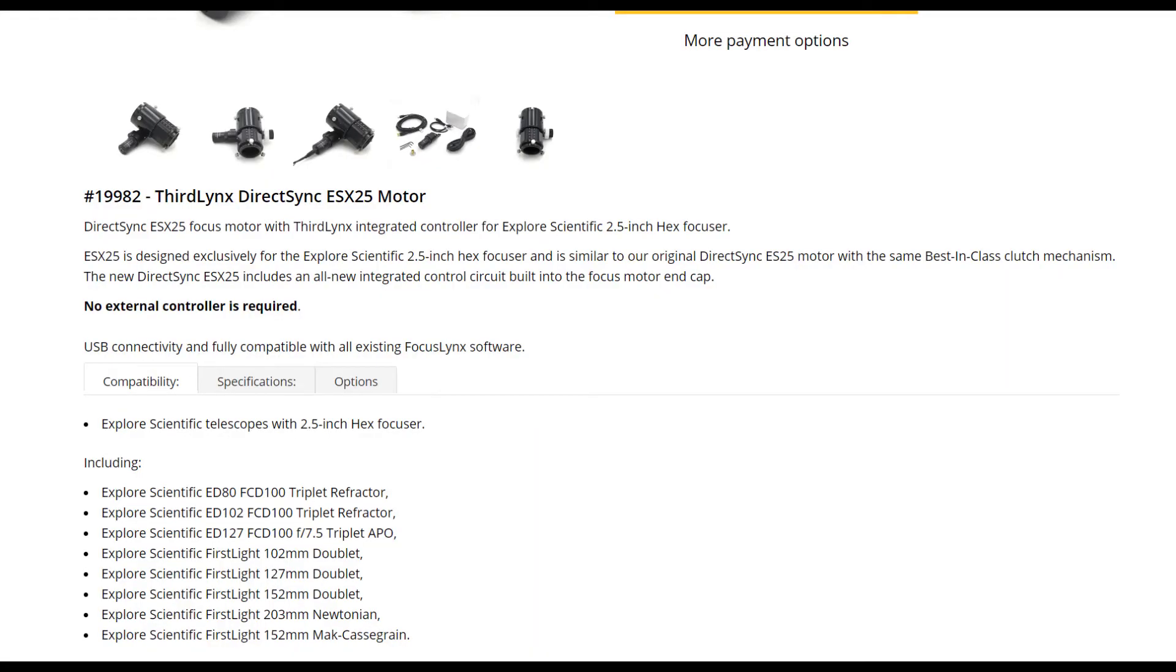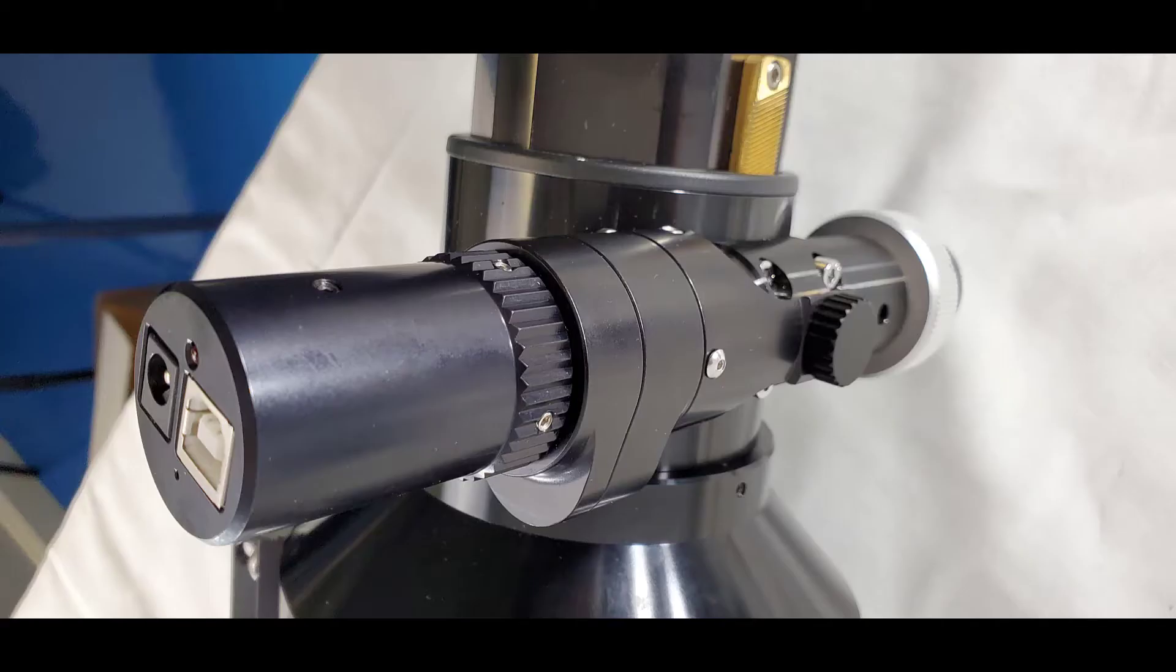Here's a little image from the Optech website you can see which telescopes come with that two and a half inch hex focuser and which one this was designed for. Although they've got a bunch of different ones for different scopes and different focusers on their website, I highly recommend you check this out if you've got the Explorer Scientific two and a half inch hex focuser.